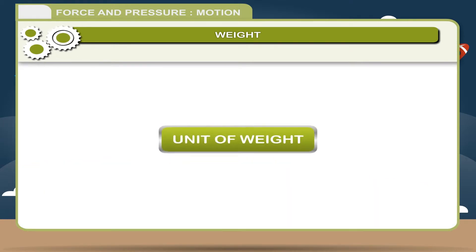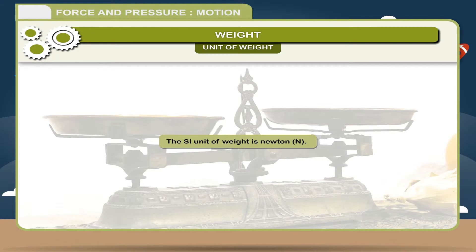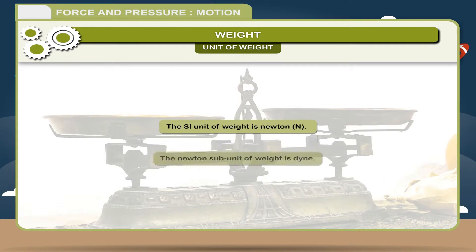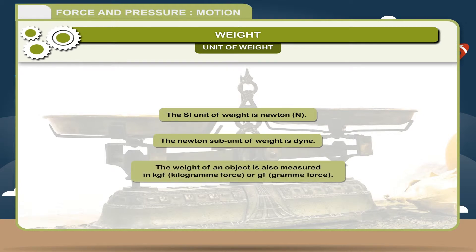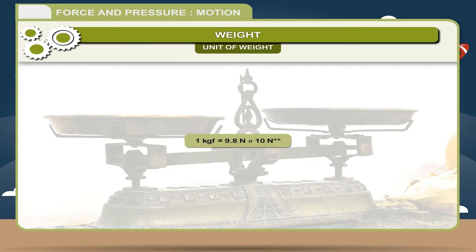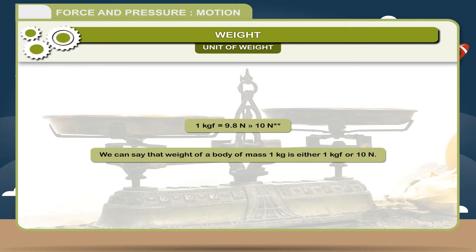The SI unit of weight is Newton (N). The subunit of weight is Dyne. The weight of an object is also measured in kilogram-force or gram-force. One kilogram-force is equal to 9.8 Newton, approximately 10 Newton. We can say that the weight of a body of mass 1 kilogram is either 1 kilogram-force or 10 Newton.